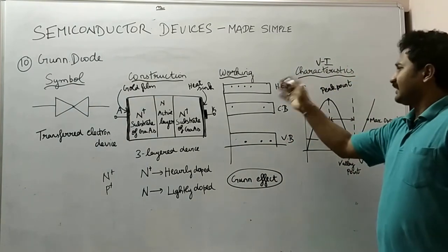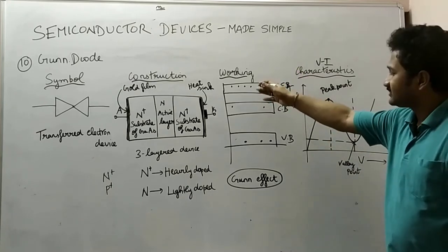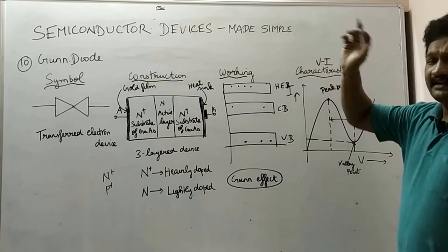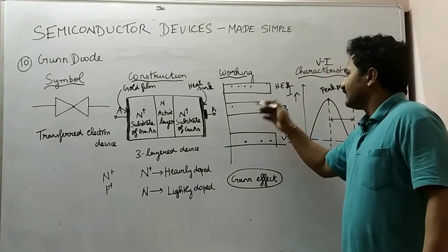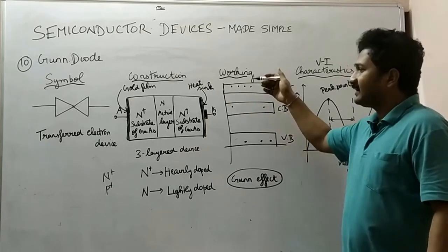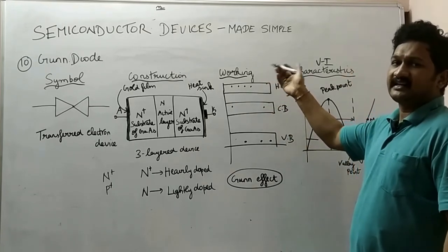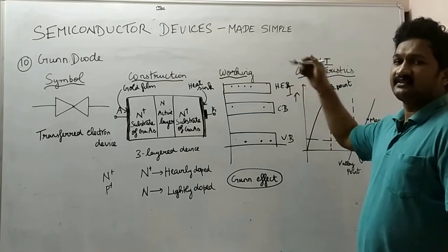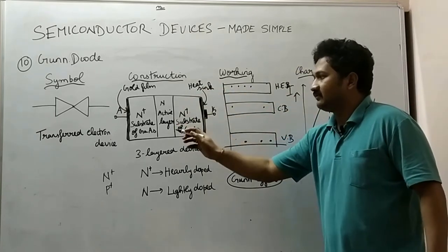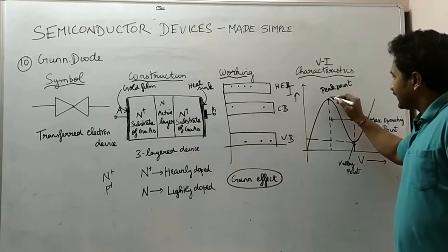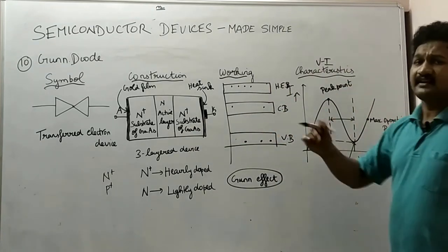This higher energy band is where the electrons are immobile — the charge carriers are immobile. This transfer of electrons from the conduction band to the higher energy band is called the transfer of electrons, and this is the reason why we call the Gunn diode a transferred electron device. At this step, the current has reached the peak point.